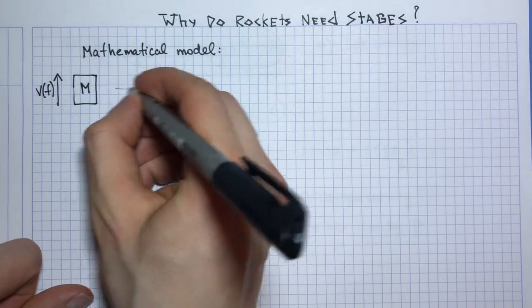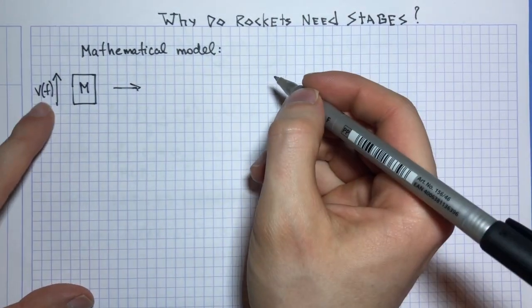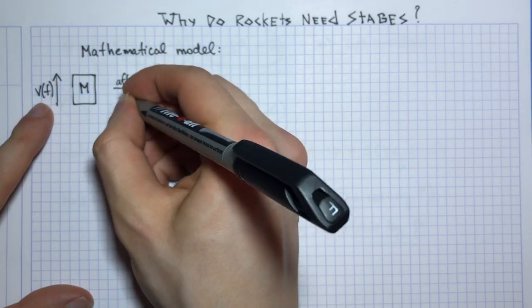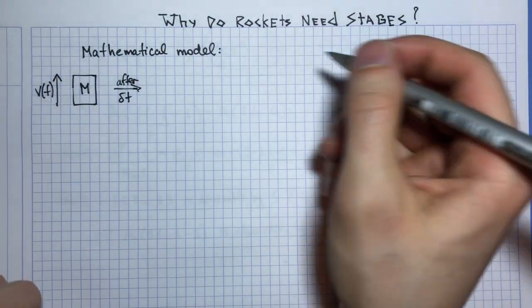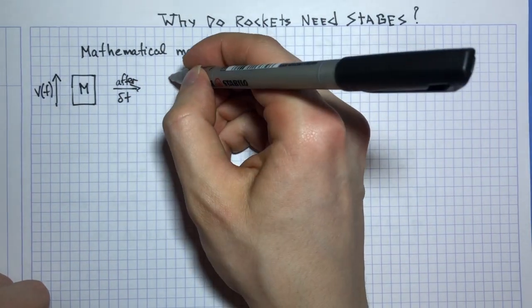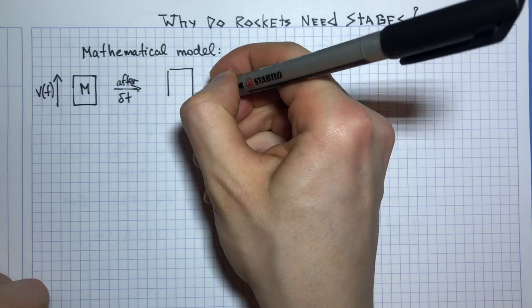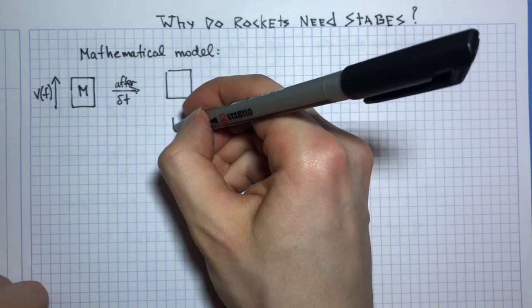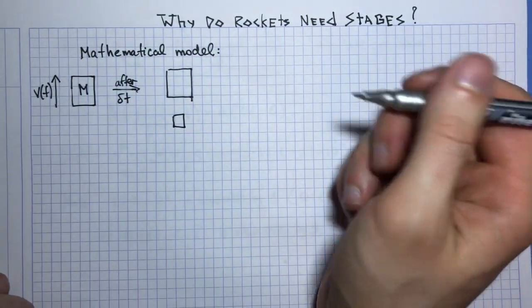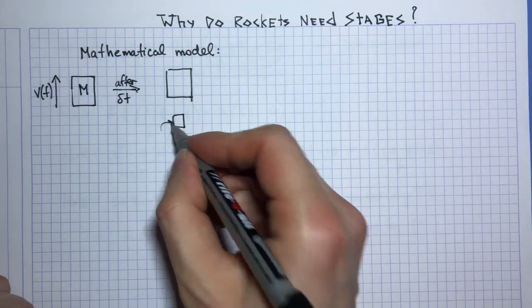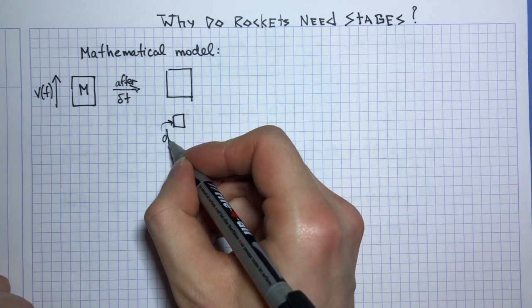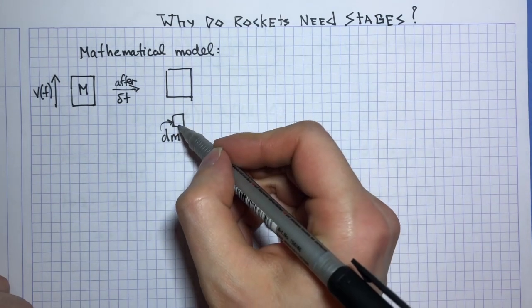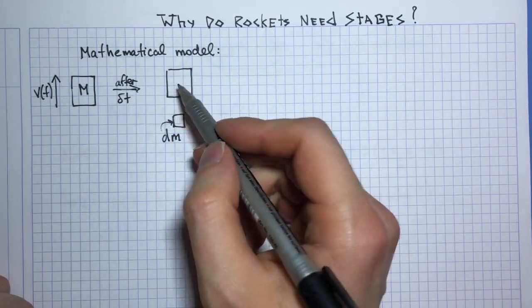And then I consider a small change in time. So after delta t, what happens? Well I still have the main body of my rocket but I have also ejected some fuel. So this amount we would call delta m, and that's how much the rocket has lost.